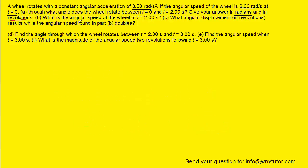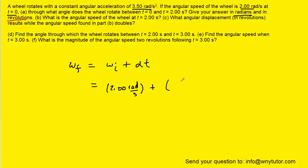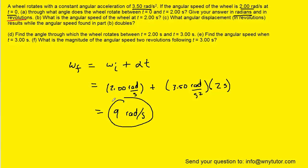For part B, to calculate the angular speed of the wheel at two seconds, we use the equation where the final angular velocity is equal to the initial angular velocity plus the acceleration times the time. The initial angular velocity was two radians per second, the angular acceleration is 3.5 radians per second squared, and the time interval is two seconds. When we compute that, we get nine radians per second.